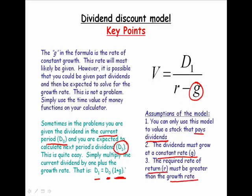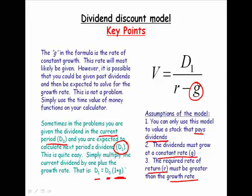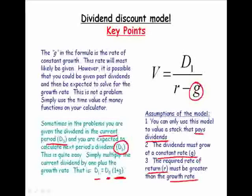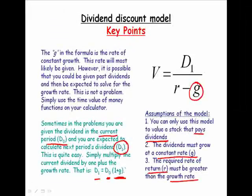Take a look at the denominator. R must be greater than G. If R is less than G, then we have a negative value in the denominator, and that would give us a negative stock price, which makes no sense. If R and G are equal, then we get 0 in the denominator, and 0 in the denominator doesn't make sense. That value would be undefined.